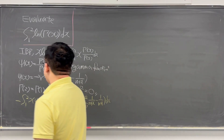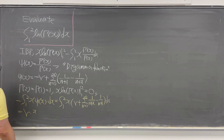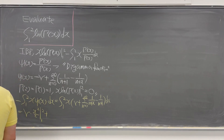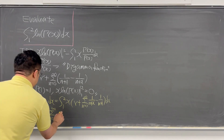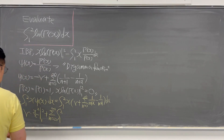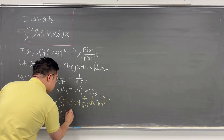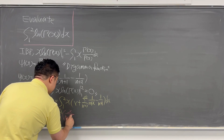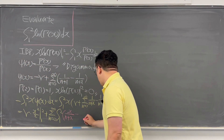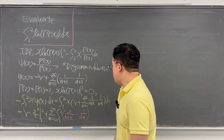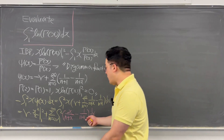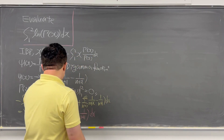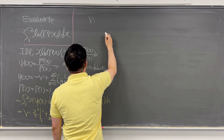Working this out, we get −γ·(x²/2) evaluated from 1 to 2, plus the summation from n=0 to infinity of the integral from 1 to 2 of [x/(n+x) − 1/(n+1)] dx, which equals −γ·(3/2) plus the summation from n=0 to infinity of the integral from 1 to 2 of [(1 − n/(n+x)) − x/(n+1)] dx.